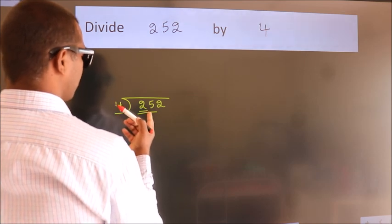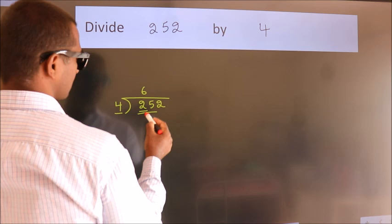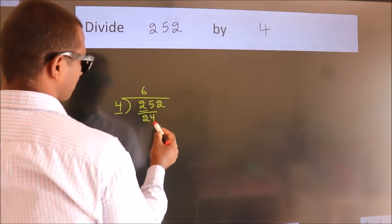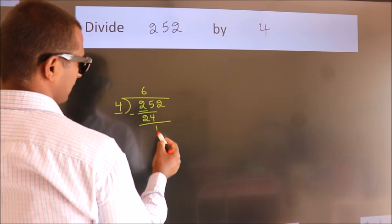A number close to 25 in the 4 table is 4×6=24. Now we should subtract. We get 1.